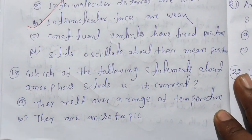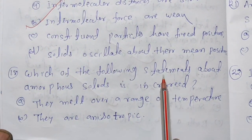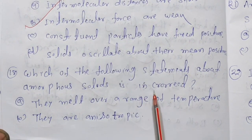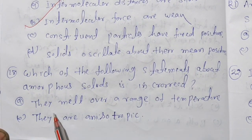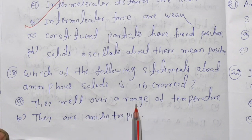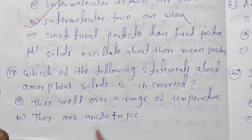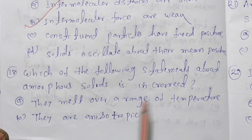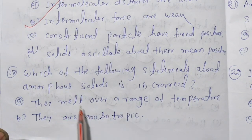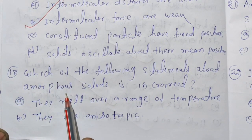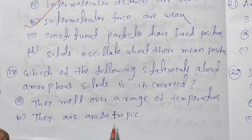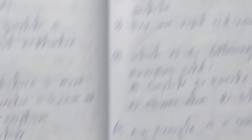Which of the following statements about amorphous solids is incorrect? They melt over a range of temperature, or they are anisotropic? The answer is anisotropic, because amorphous solids are actually isotropic. Crystalline solids are anisotropic. So the statement 'they are anisotropic' is wrong for amorphous solids.